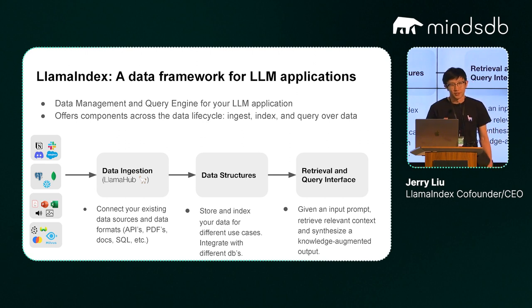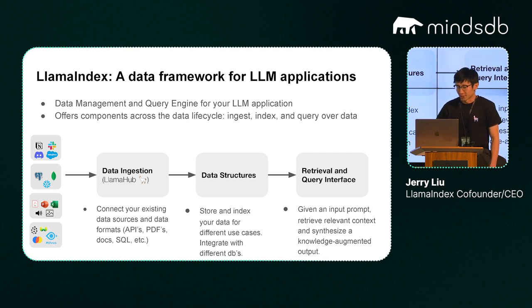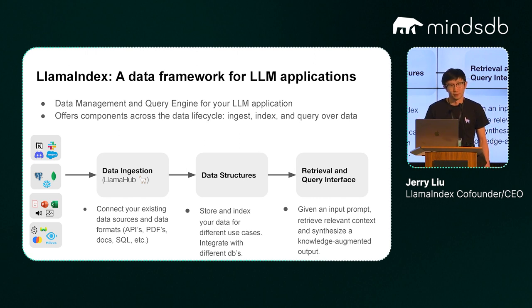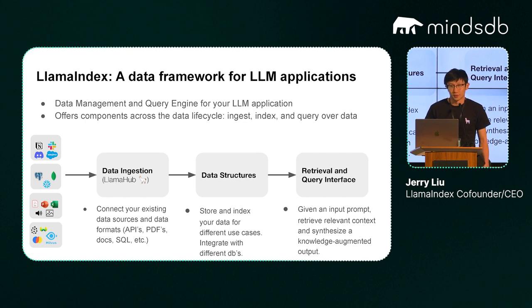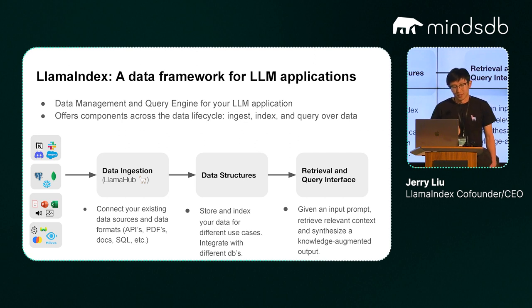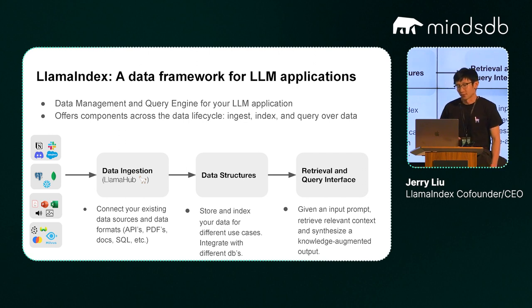The next part is how do you actually structure and store this data. There's a very basic way of doing it: you take some unstructured text, split it up, and throw everything into a vector database. But once you start thinking about performance requirements and getting the best results from your queries, you might need to do some additional work in terms of structuring as well as querying, in order to give you good query performance over your data. There's also being able to store the right state so that you can retrieve it later, and then how do you build the right retrieval and query interface on top of your data.